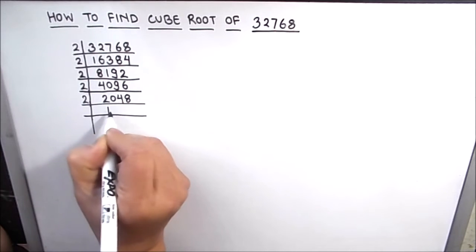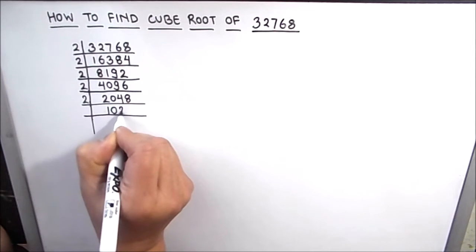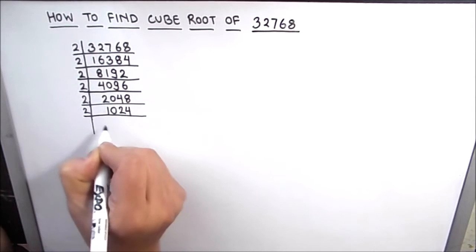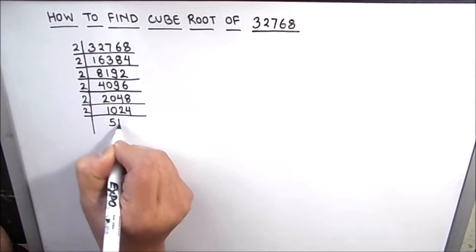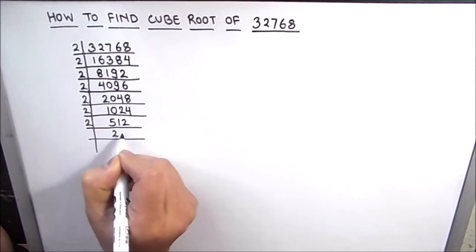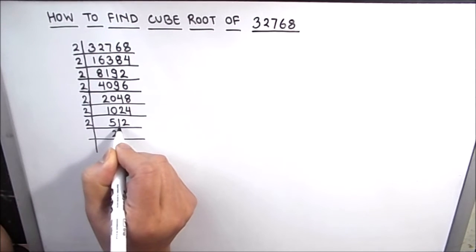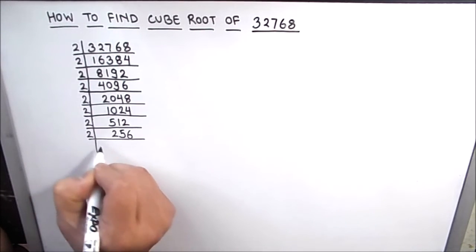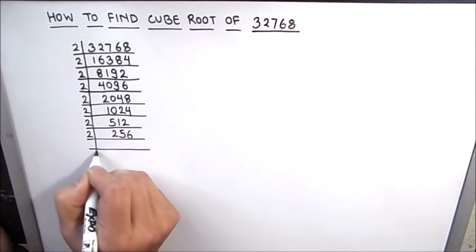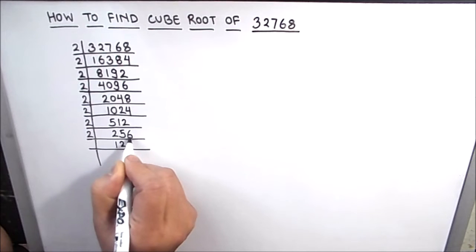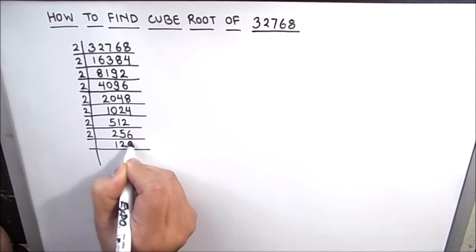Continuing to divide by 2: 2 times 1 is 2, 2 times 1 is 2, 2 times 2 is 4, 2 times 2 is 4, 2 times 2 is 4, 1 is carried over this becomes 11, 2 times 5 is 10, 1 is carried over this becomes 12, and 2 times 6 is 12. Again we got an even number so it is divisible by 2: 2 times 1 is 2, 2 times 2 is 4, 1 is carried over this becomes 16, and 2 times 8 is 16.